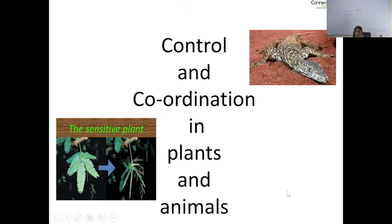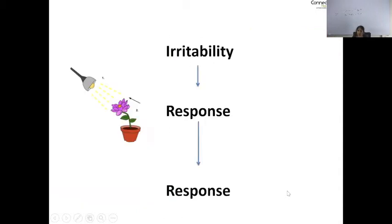Whenever we study this kind of coordination, there are three very important aspects. The first one is called irritability. Our skin, or any of our sense organs, recognizes irritability and sends a signal to some part of our body, which we call a stimulus, and that leads to a response.